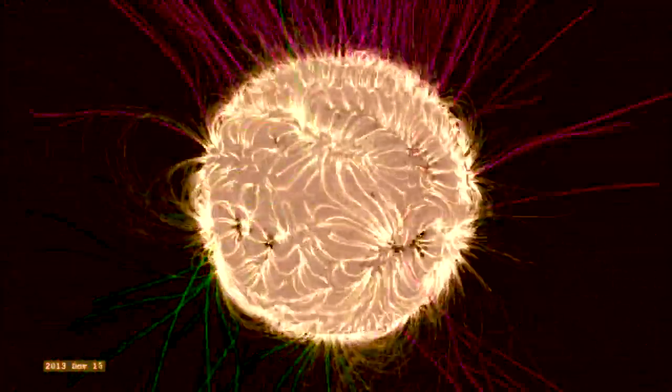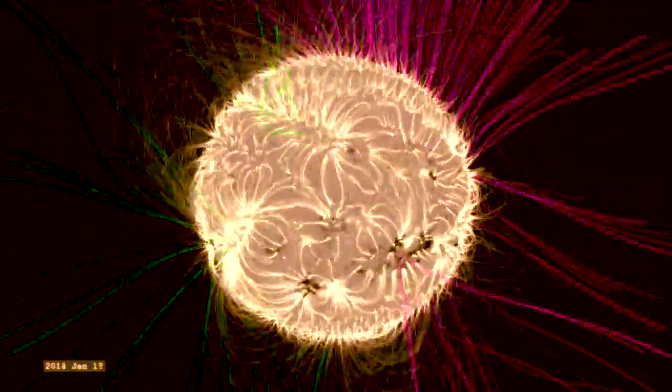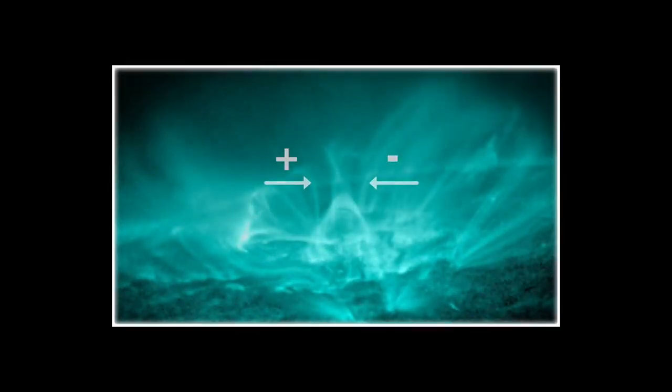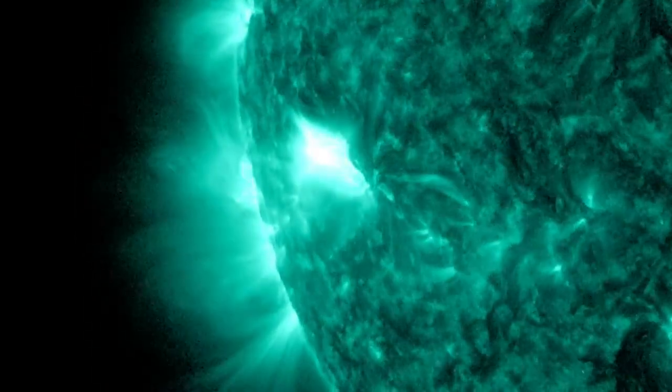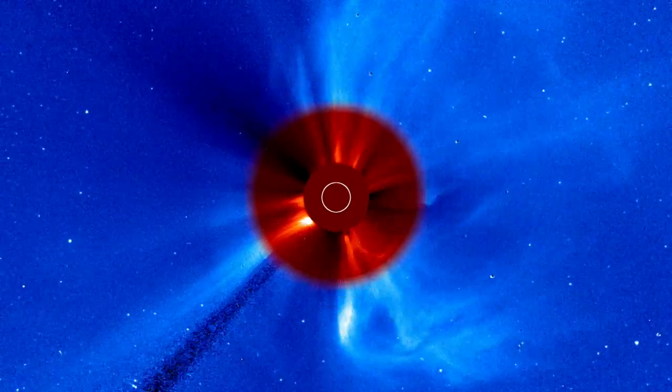They determine how, or whether, underlying structures can move outwards. When solar structures with opposite magnetic orientation collide, we expect to see them explosively release energy, yielding a flare and a burst of material called a coronal mass ejection.